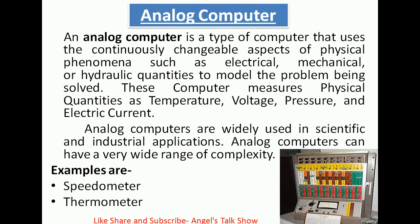First one is analog computer. An analog computer is a type of computer that uses the continuously changeable aspects of physical phenomena such as electrical, mechanical or hydraulic quantities to model the problem being solved. These computers measure physical quantities such as temperature, voltage, pressure and electric current.